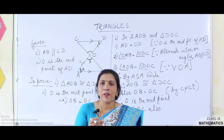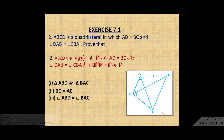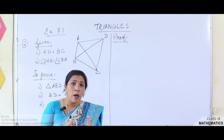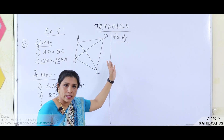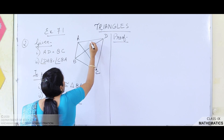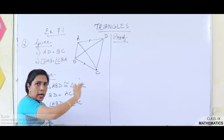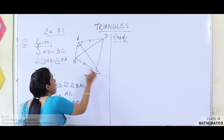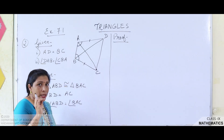Now let's go to exercise 7.1 question number 2. ABCD is a quadrilateral in which AD is equal to BC and angle DAB is equal to angle CBA. Prove that triangle ABD is congruent to triangle BAC, BD is equal to AC, and angle ABD is equal to angle BAC. The equal parts given are AD equal to BC, and angle DAB equal to angle CBA — mark these carefully.